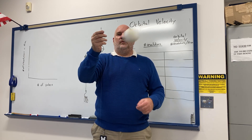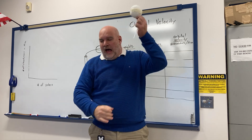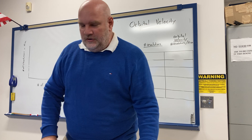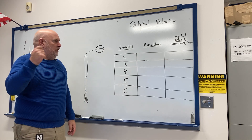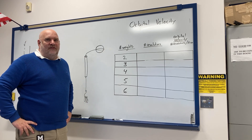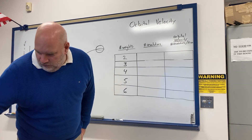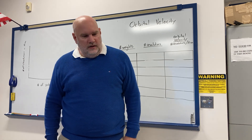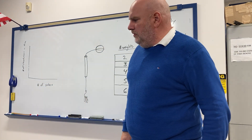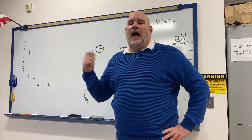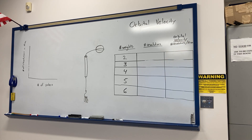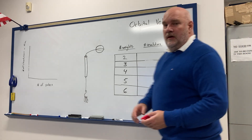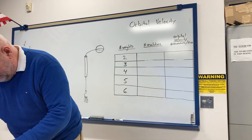We're going to see how the force of gravity affects how fast the ball has to go to stay in orbit. I'll start off with two sinkers on the bottom, get the thing twirling, then count off 10 seconds using a timer. What you're going to do is count how many times the ball goes around in those 10 seconds.